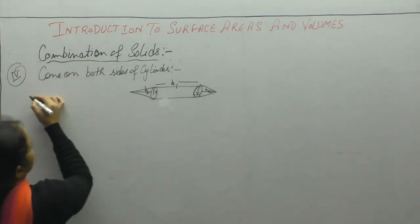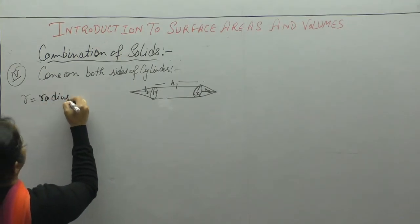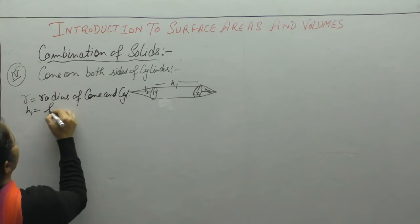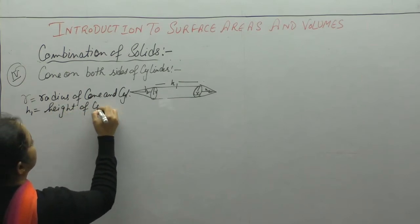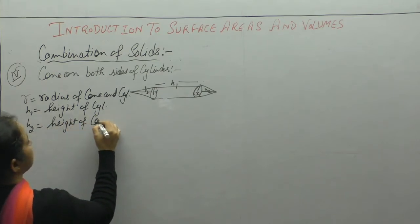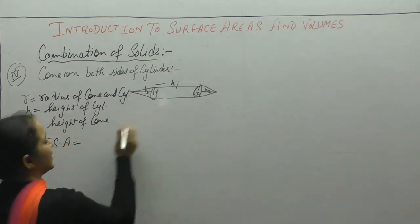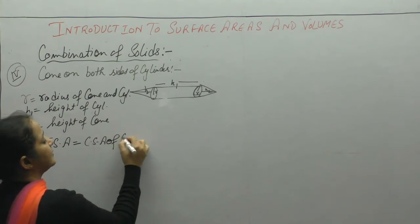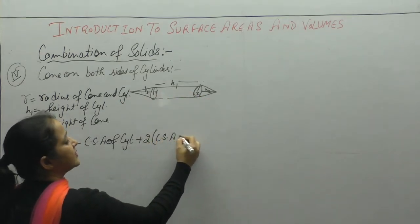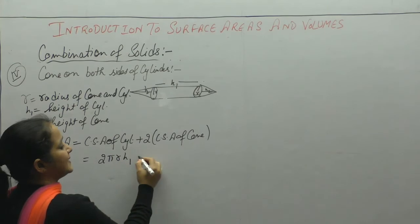Write down: r is the radius of cone and cylinder, h1 is the height of cylinder, and h2 is the height of cone. Now, if we have to find the total surface area, it will be curved surface area of cylinder plus — since there are cones on both sides — two times curved surface area of cone. Curved surface area of cylinder is 2πrh1.